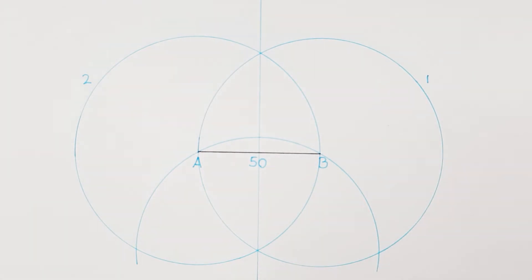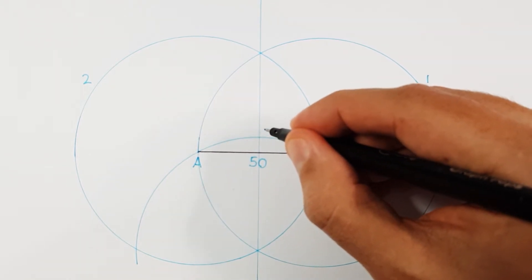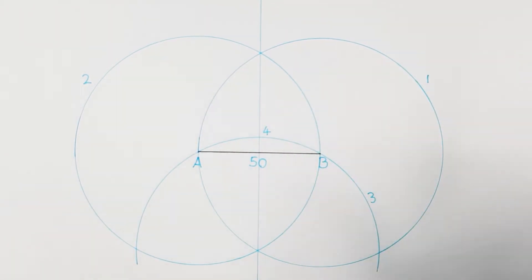You can label this circle as your third circle to be used as reference. Where your third circle sections your middle point method, we will label that as point number 4.